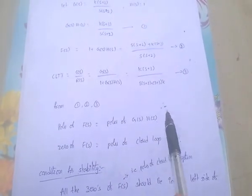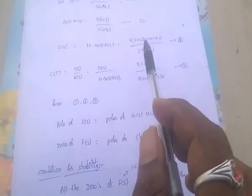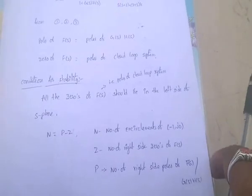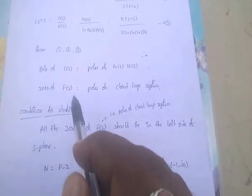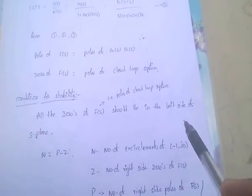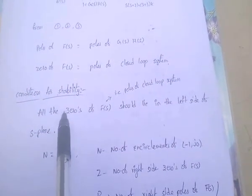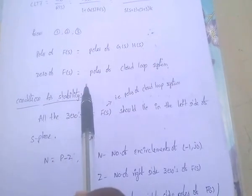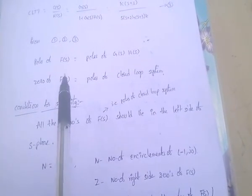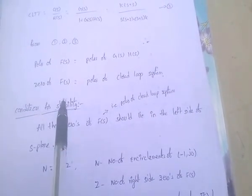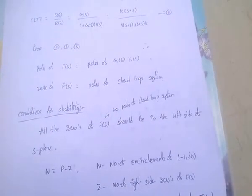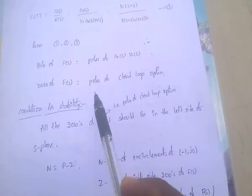The condition for stability: all the zeros of F(S) should lie in the left half of the S-plane. Since zeros of F(S) equal poles of the closed loop system, the poles of the closed loop system should lie in the left side of the S-plane. F(S) = 1 + G(S)·H(S), and its zeros must lie in the left half.